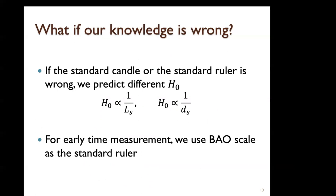Where can new physics come in? When we calculate the luminosity of the standard candle or the length of the standard ruler, we use our known physics. But if there's new physics, the luminosity or the length might differ from what we expect. The Hubble today is inversely proportional to the luminosity or the length of the standard ruler. For early-time measurements, we use the BAO scale as the standard ruler.